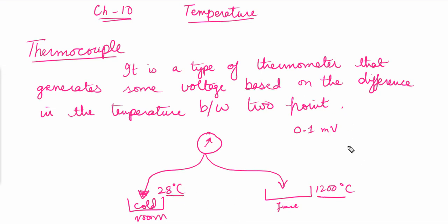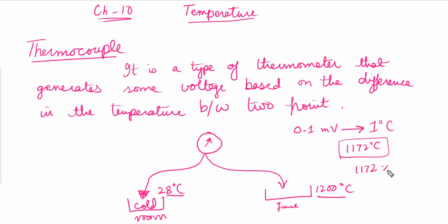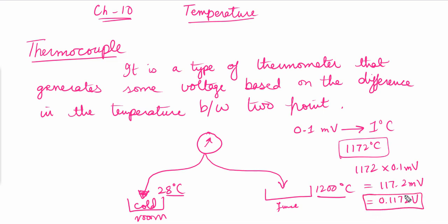With a difference of 1172°C and a scale of 0.1 millivolts per degree, the thermocouple will generate 1172 × 0.1 = 117.2 millivolts, or 0.1172 volts. This voltage is generated based on the temperature difference between the two ends of the thermocouple, making it suitable for measuring very high temperatures.